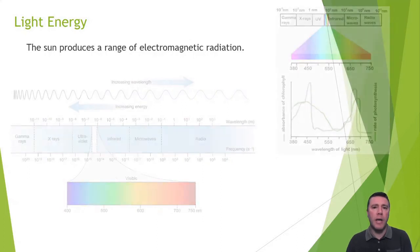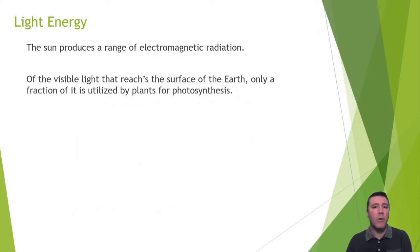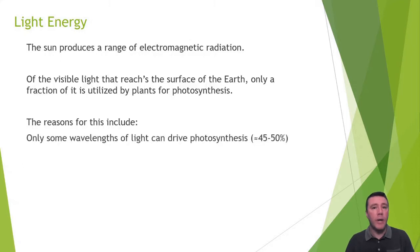Of the visible light that reaches the Earth's surface, only a tiny fraction of it is used in photosynthesis. First, because the primary pigment found in plants is green, green wavelengths of light are reflected by the plants, and it is other wavelengths of light in the blue, purple, and red region that are absorbed, which drive photosynthesis.